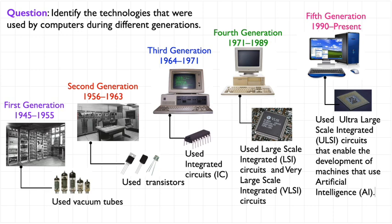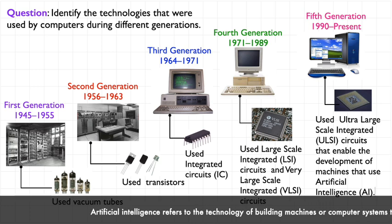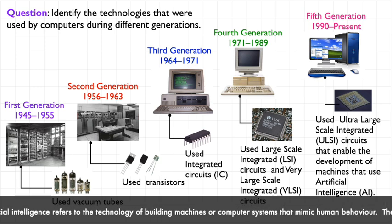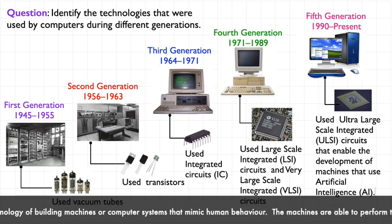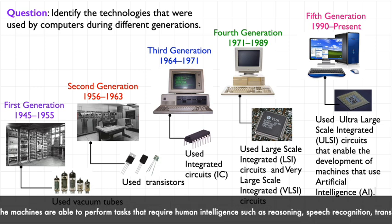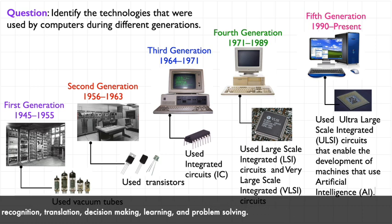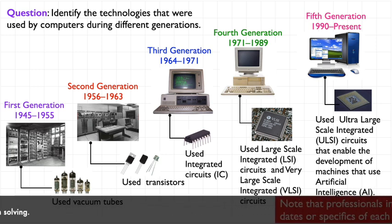Fifth generation computers have advanced the use of artificial intelligence, popularly known as AI. Artificial intelligence refers to the technology of building machines or computer systems that mimic human behavior. The machines are able to perform tasks that require human intelligence such as reasoning, speech recognition, translation, decision making, learning, and problem solving.